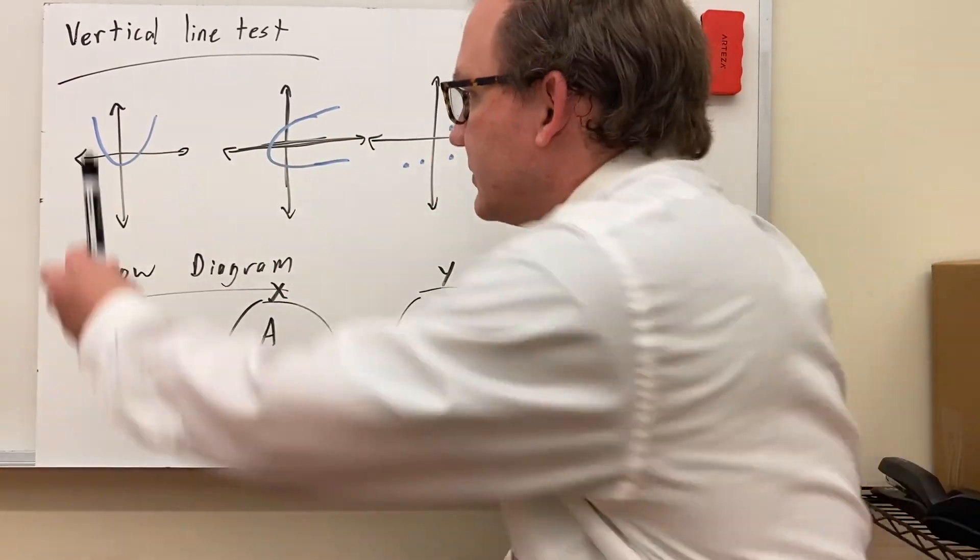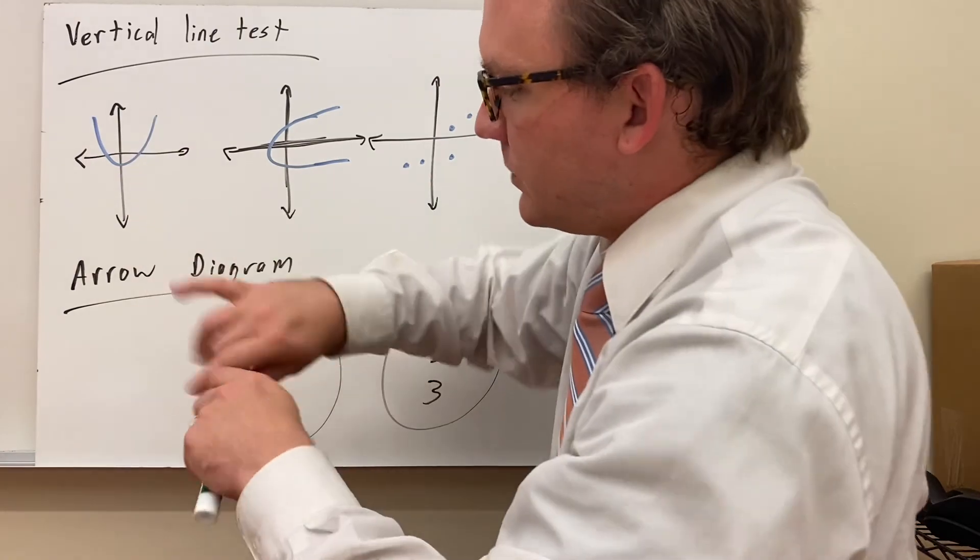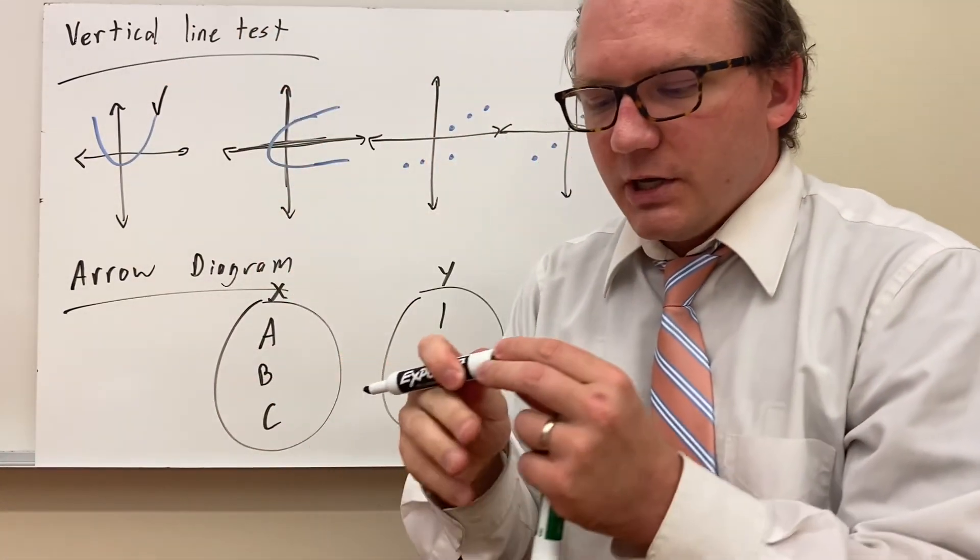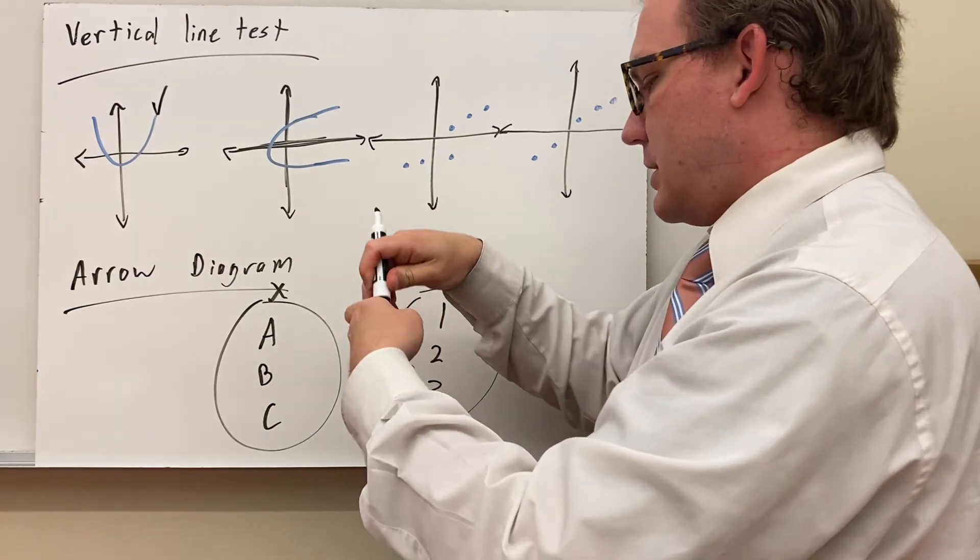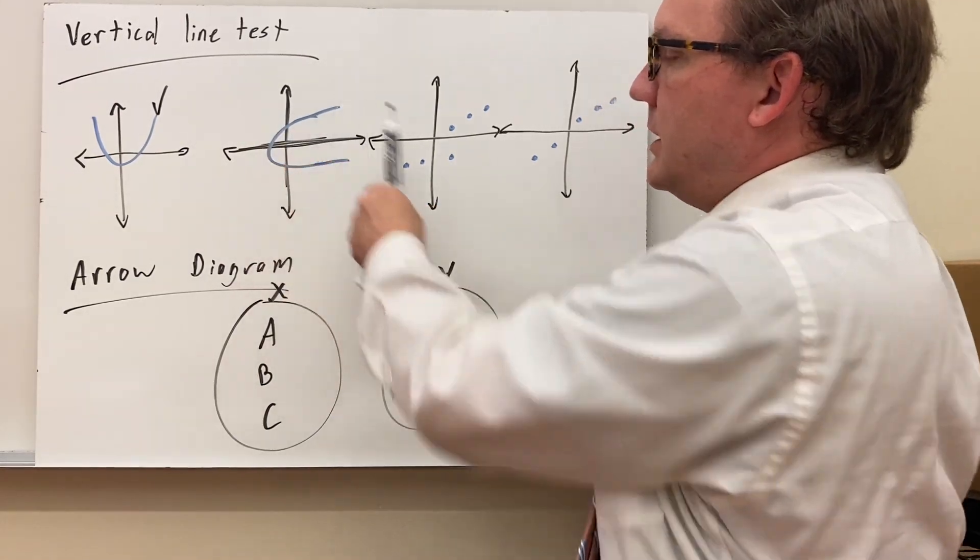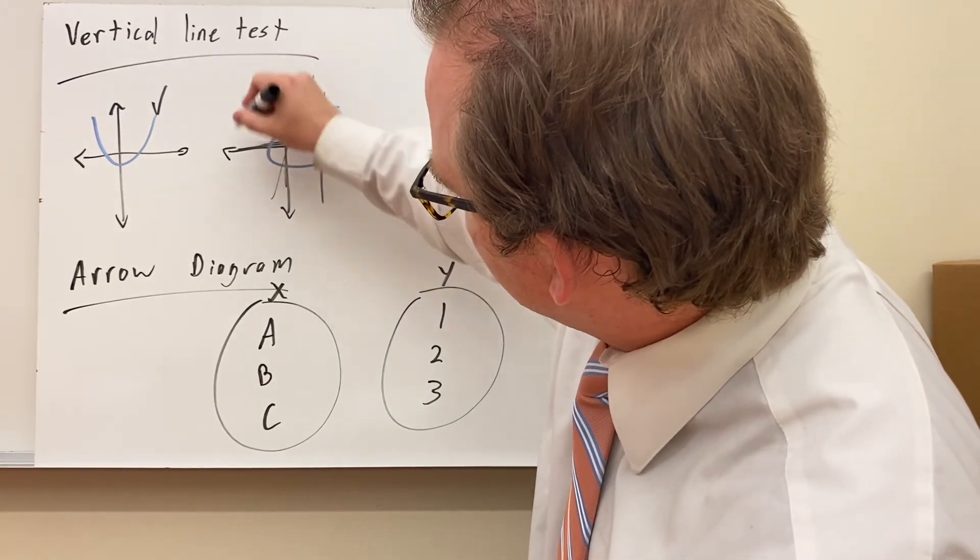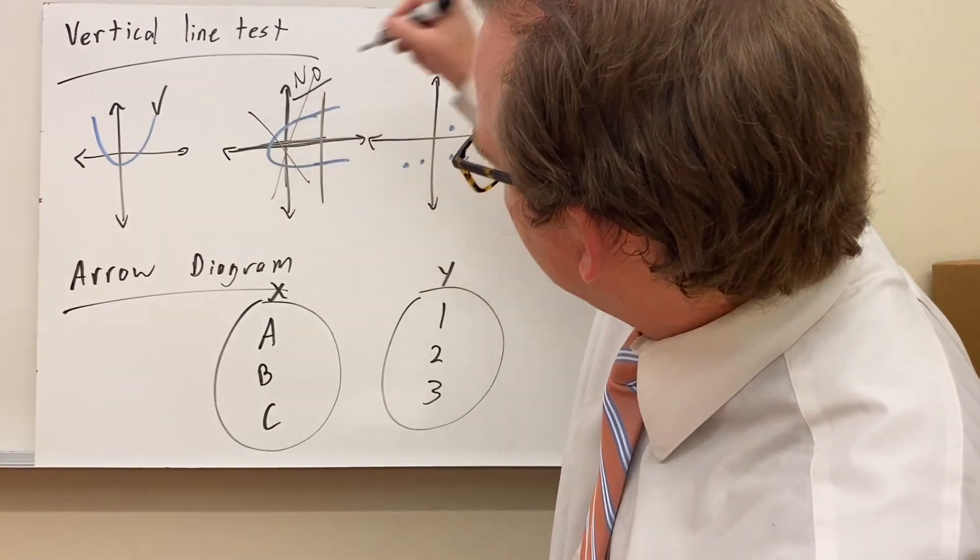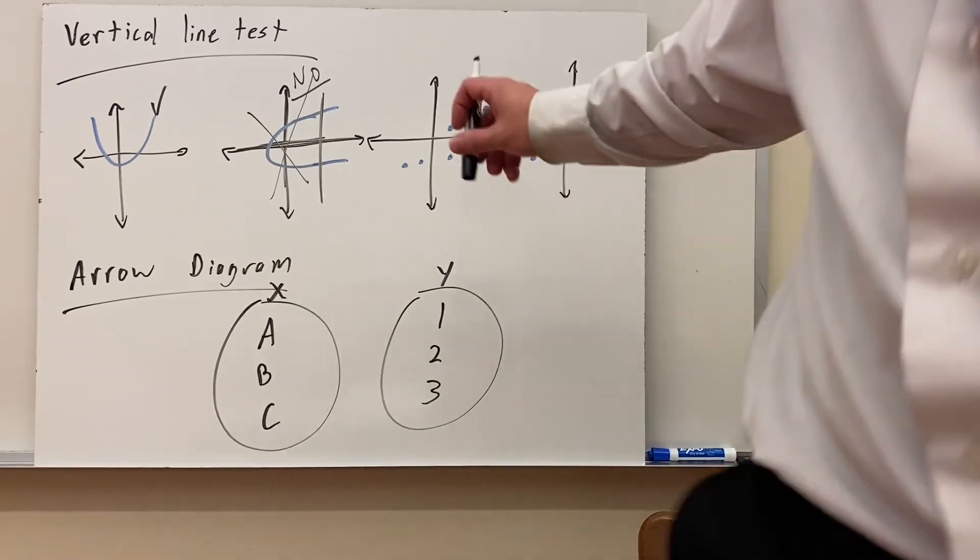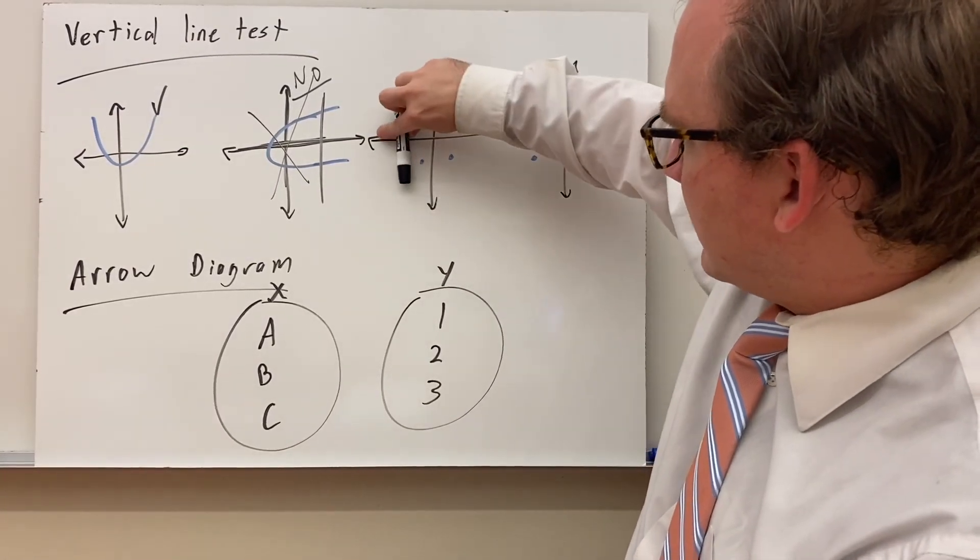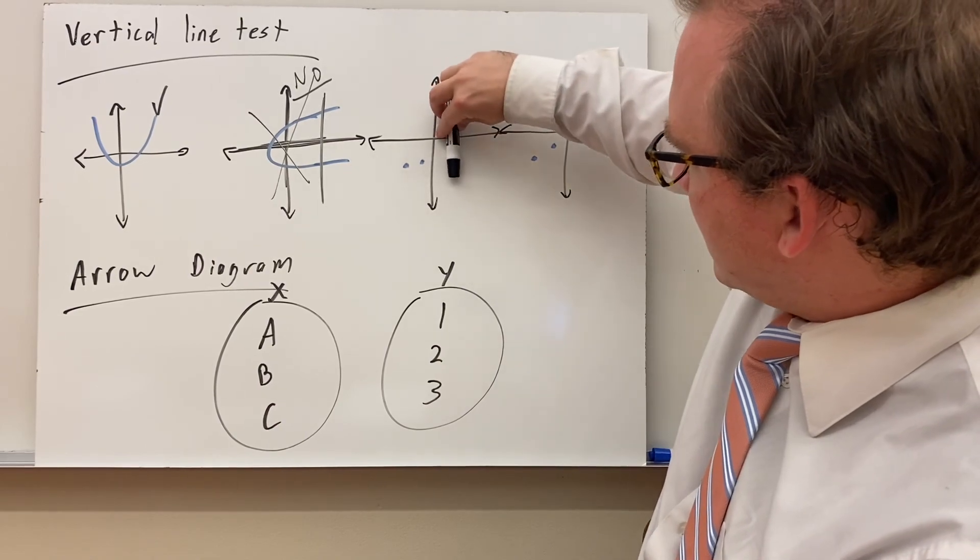If my vertical line does cross the function more than once, it is not a function. If it does not, it is a function. So this only crosses one time, so this one is a function. This one here, if I put my vertical line, it crosses more than once, so this is not a function.